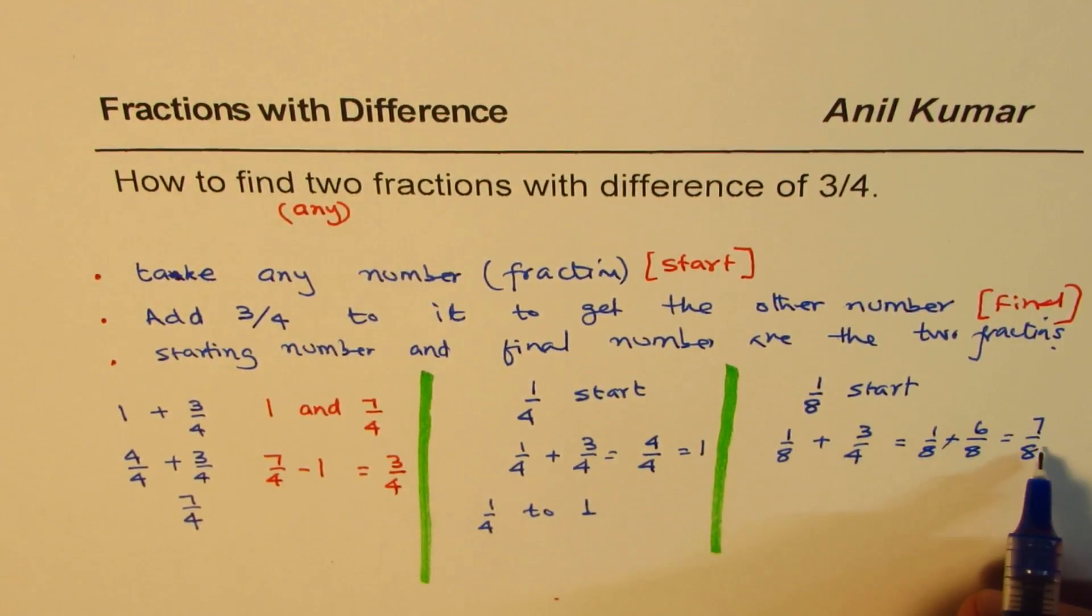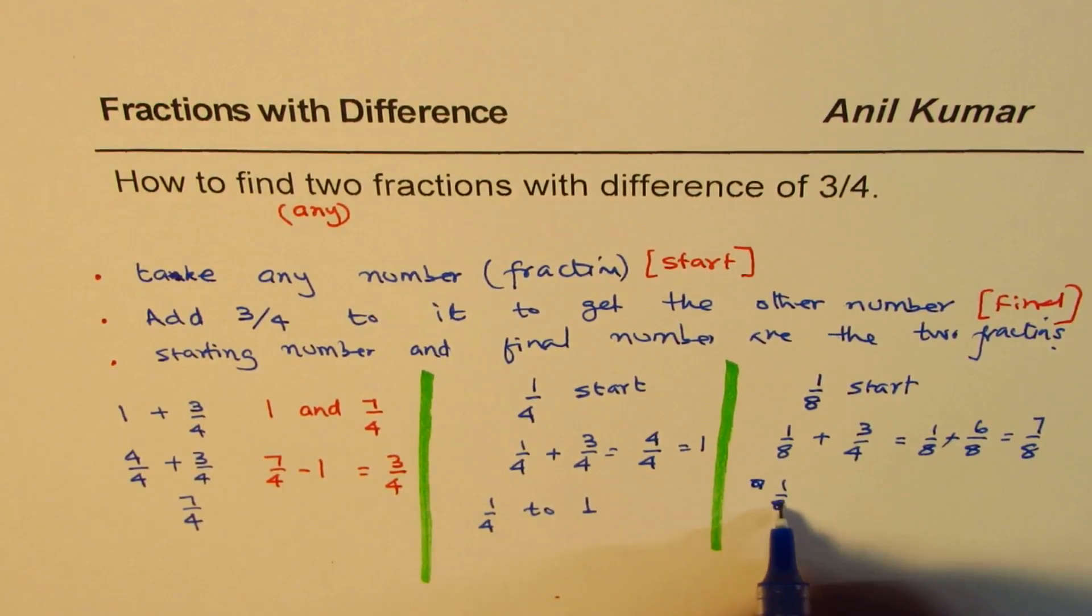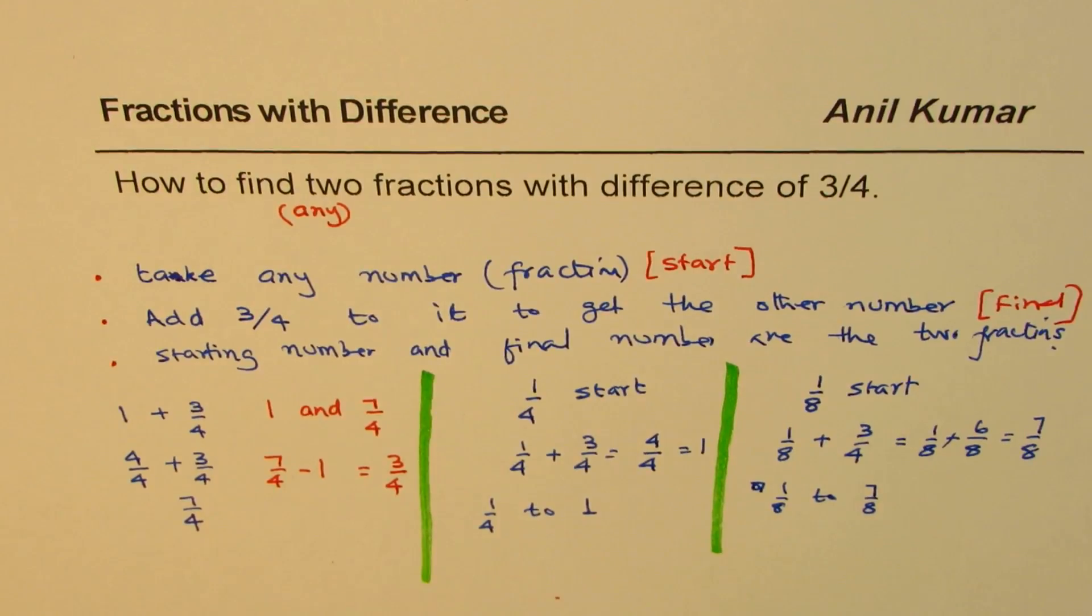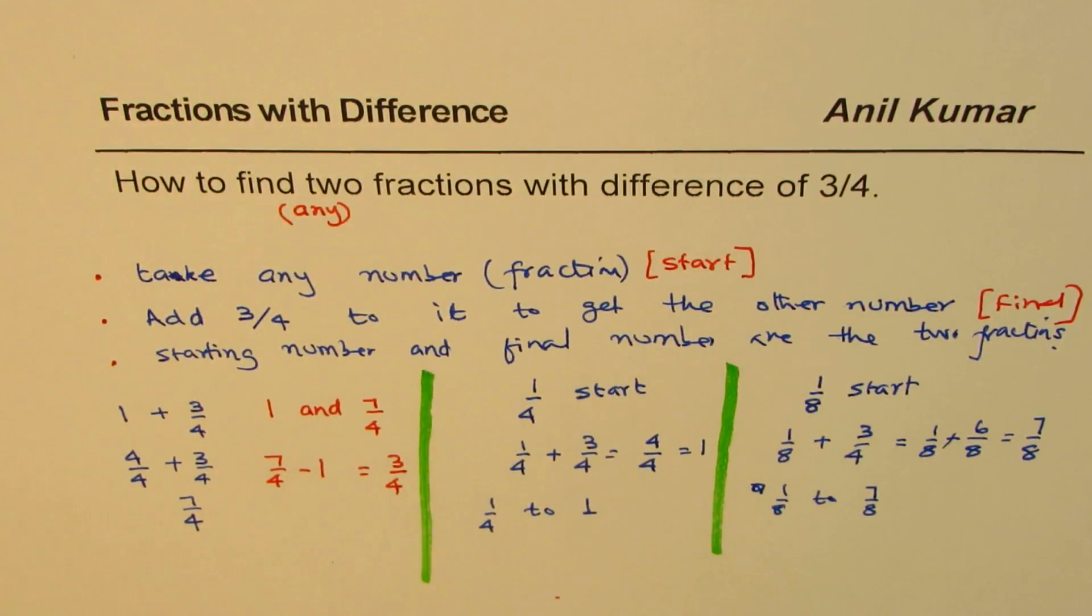which is 7 out of 8. So, the 2 numbers are 7 out of 8 is the final number. So, it is from 1 out of 8 to 7 out of 8 will be 2 numbers which have a difference of 3 by 4.